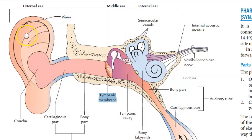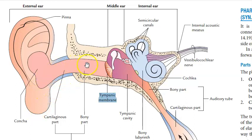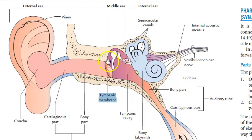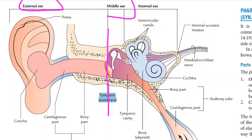Looking at the external ear, you have the pinna, then you have the concha, then you have the external auditory meatus. In that there are two parts: the cartilaginous part first, and then you have the bony part. Then you have the tympanic membrane, which is the eardrum — the boundary between the external ear and the middle ear.